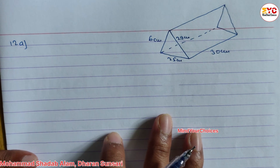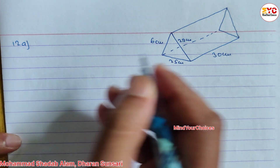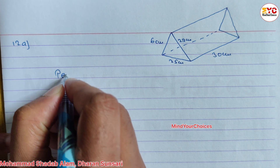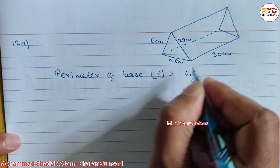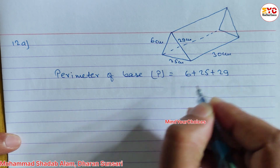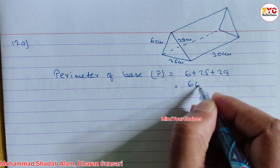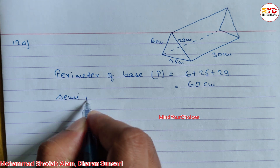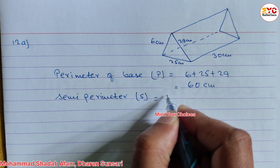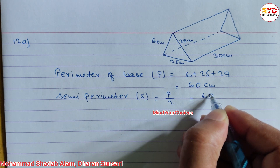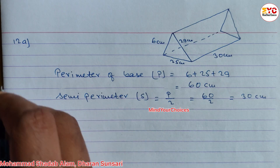First we need the semi-perimeter. Perimeter of base: P = sum of all sides = 6 + 25 + 29 = 60 cm. Now find semi-perimeter — semi-perimeter means half of perimeter. So P/2 = 60/2 = 30 cm. Semi-perimeter is 30 cm.